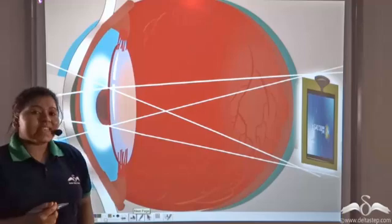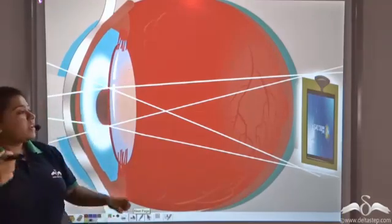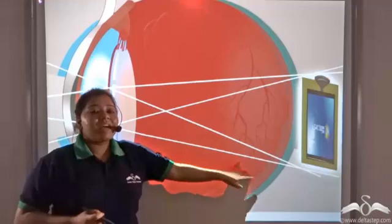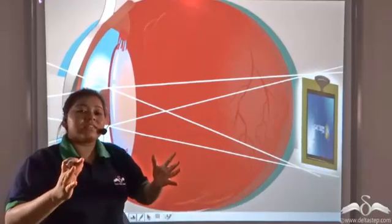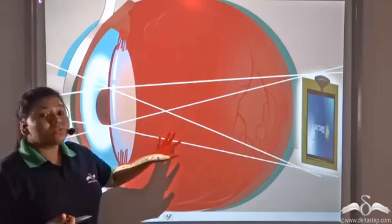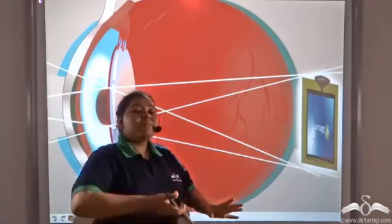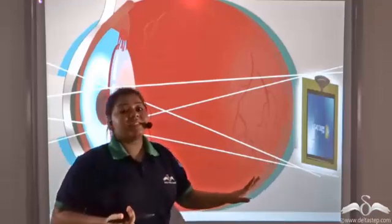In this case, the lens becomes flattened and also the eyeball becomes shortened. As a result of which the image does not get focused on the retina, but it gets focused behind the retina.